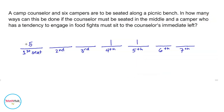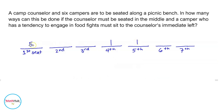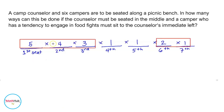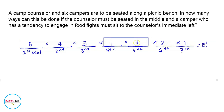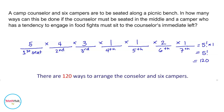For the first seat we have five choices, since two people — the counselor and the food fighter — are already seated. For the second seat we have four, for the third we have three, for the sixth we have two, and for the seventh we have one. Applying the basic counting principle: 5×4×3×2×1 × 1 × 1 = 5! = 120. Therefore there are 120 ways to arrange everyone.